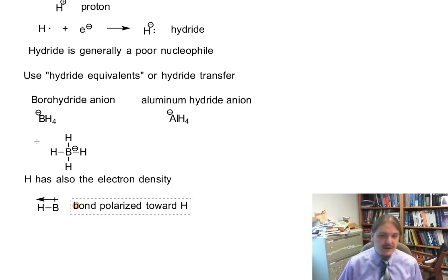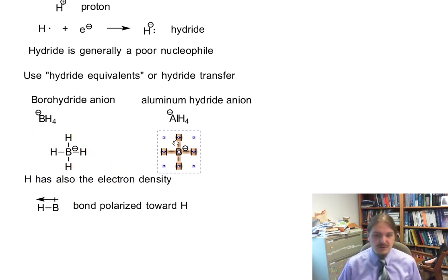The aluminum hydride anion is very similar, except we swap boron with aluminum. And aluminum is the element in the periodic table right below boron. So we're going to expect these to be pretty similar in structure and similar in behavior, but maybe not quite similar in the way they react. Well, similar in the way they react, but one of them might be more reactive or less selective. And we'll get to that.